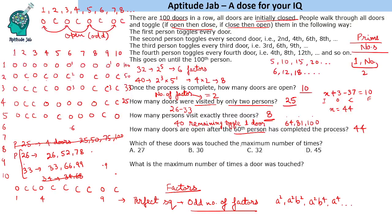Which of these doors was touched the maximum number of times? The number of times a door is toggled equals the number of its factors. For example: 27 = 3³ has 4 factors; 30 = 2 × 3 × 5 has 8 factors; 32 = 2⁵ has 6 factors; 45 = 3² × 5 has 6 factors. So door number 30 is touched the maximum number of times — 8 times.